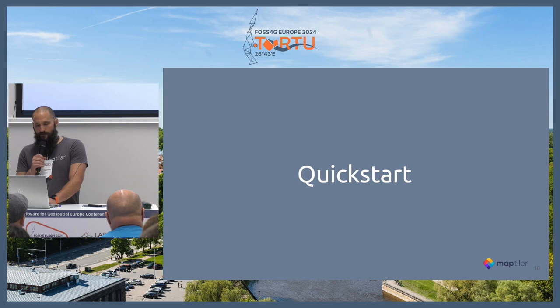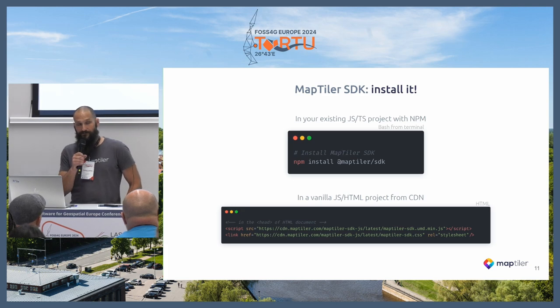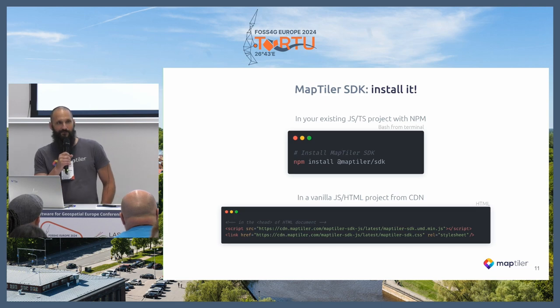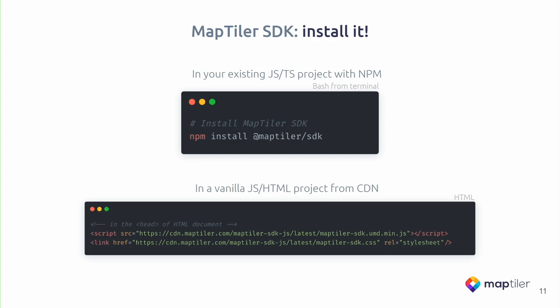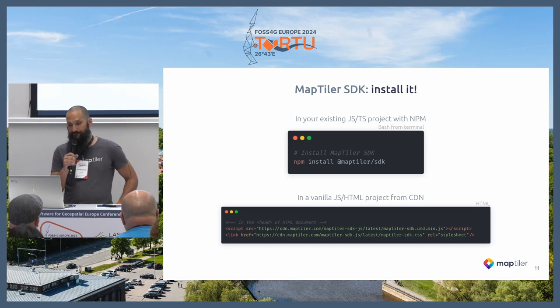Let me show you a quick start — how to get started with MapTiler SDK. First, you have to install it. Most of you probably have experience with JavaScript or TypeScript, so the way is pretty straightforward: just run npm install @maptiler/sdk. If you are more familiar with vanilla JavaScript or HTML development, you can simply include the JavaScript library and CSS file directly from the CDN. That's it.